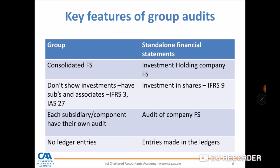With group audits, you don't show investments but instead show subsidiaries or associates consolidated into one entity through IFRS 3, IAS 27, or IFRS 10. With a standalone, when a holding company acquires a subsidiary they acquire shares, so it appears as an investment. In the group, you consolidate the financial statements of subsidiaries or associates and combine them to produce one set of financial statements.